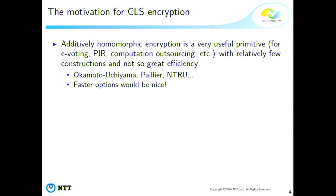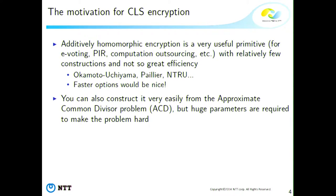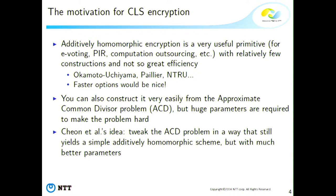The authors, Chon, Li, and So, observed that you can construct additively homomorphic encryption very easily from the Approximate Common Divisor (ACD) problem. But you need huge parameters to make the problem hard, so it's not very efficient. Their idea was: could we tweak the ACD problem so that you still have a simple scheme but with much better parameters and interesting efficiency?